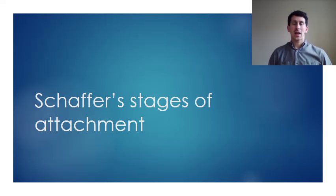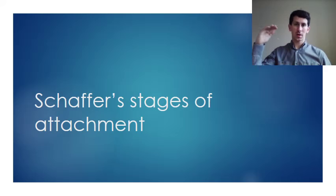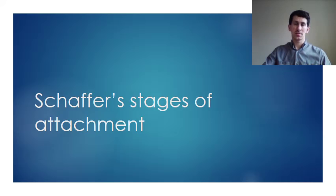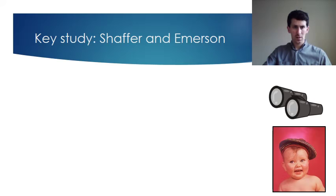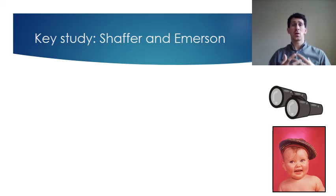This video is going to look at Schaffer's stages of attachment. Schaffer came up with the idea that as children get older, their level of attachment and how they attach changes. We're going to look at these four stages and what each of them involves, and how we came about with this theory. This is a key study on your specification, so you've got to know this one off by heart — you've got to recall the procedures and the findings.